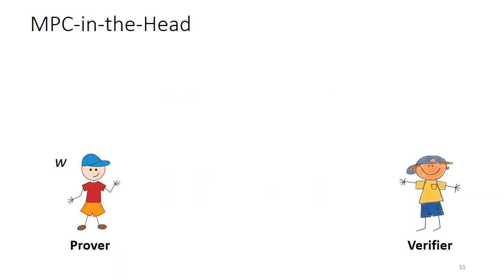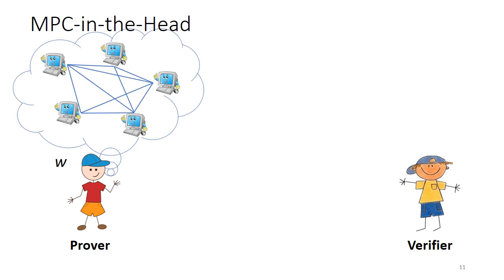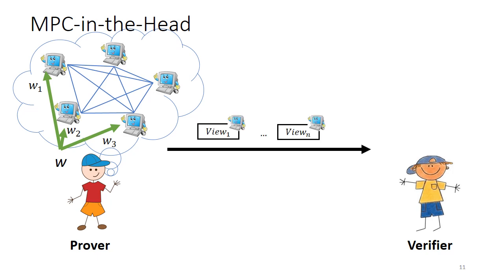A well-known paradigm for constructing a zero-knowledge protocol is the MPC in the head paradigm. There, a prover will simulate in its head an MPC protocol between multiple servers. It will first secret share its witness to all of the servers in the multi-party computation, and then these servers will run an evaluation of the circuit C. This whole interaction only happens in the head of the prover.